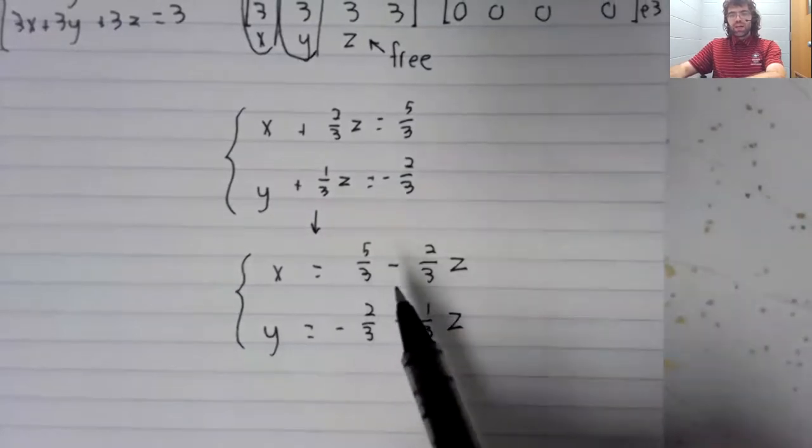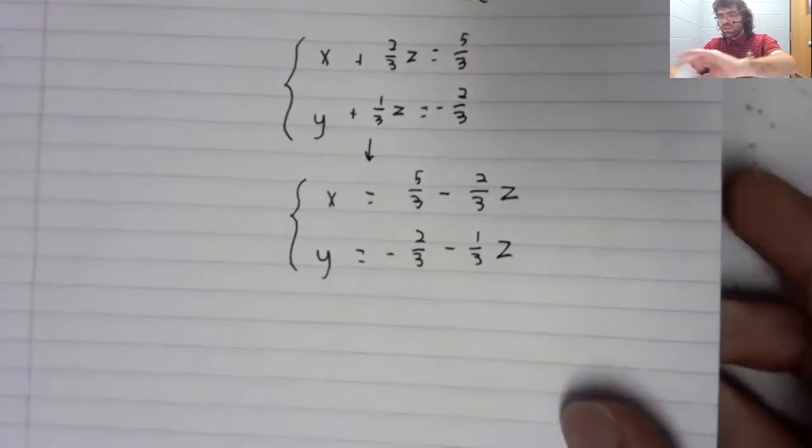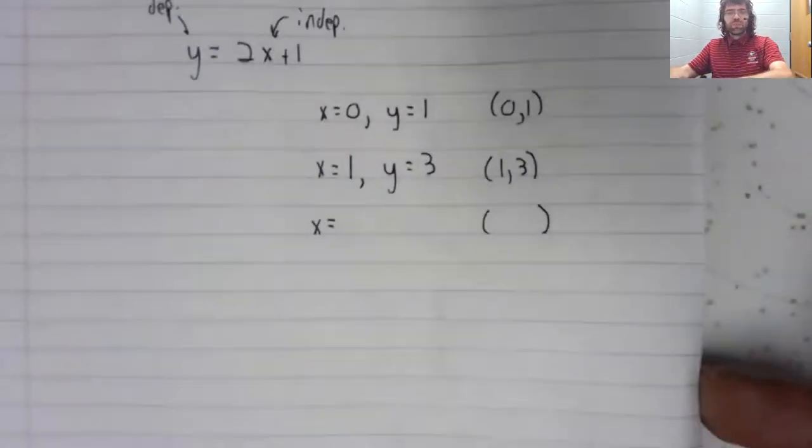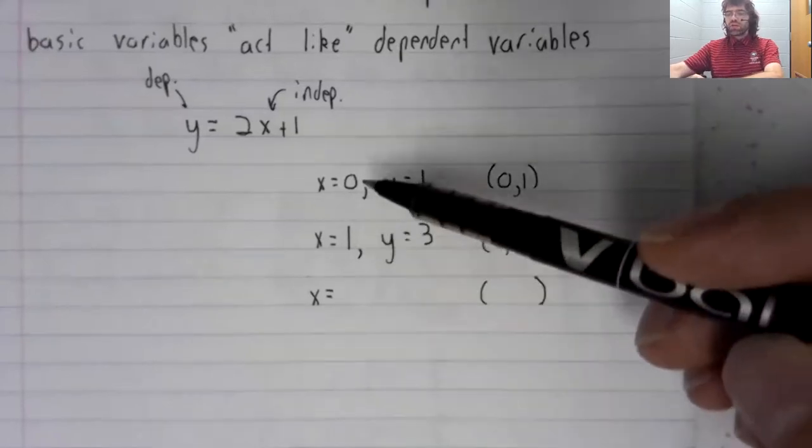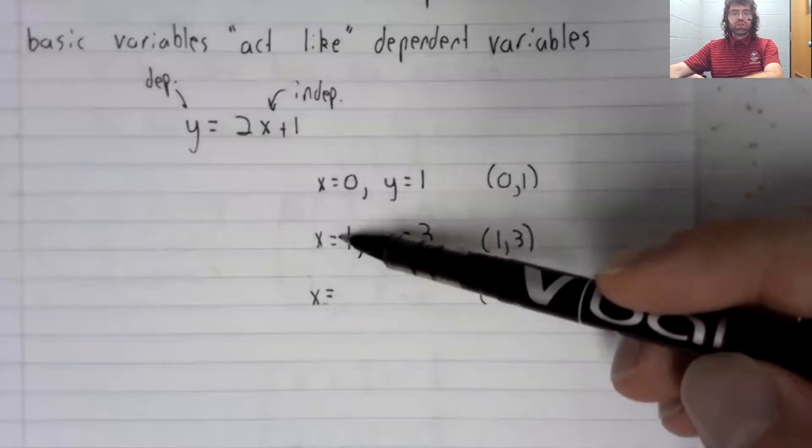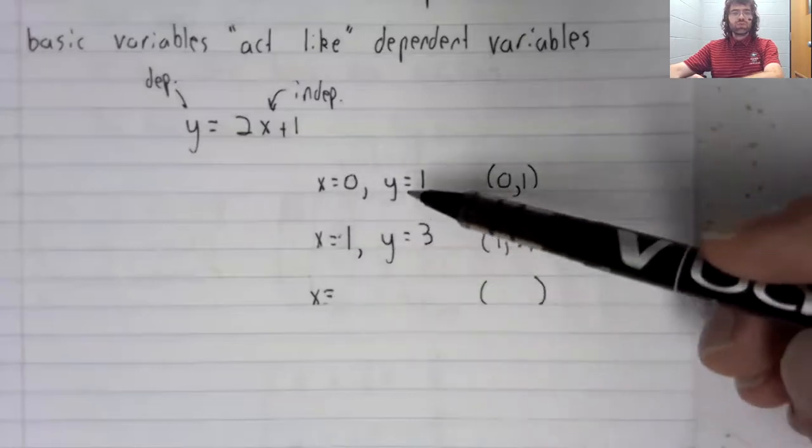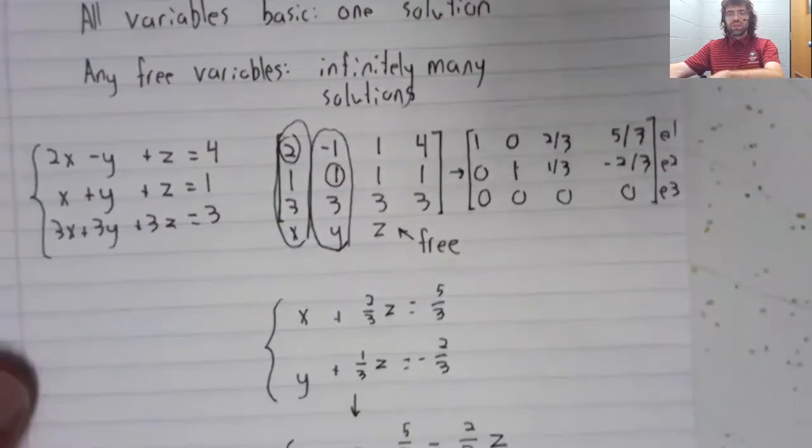And what we have here is very similar to what we had here. Here, x could be anything. And once you determined x, you knew what y is. Here,